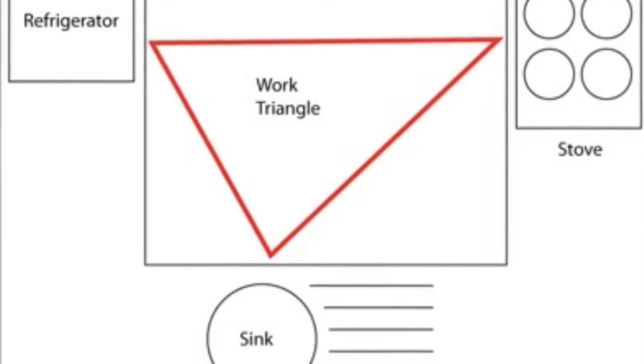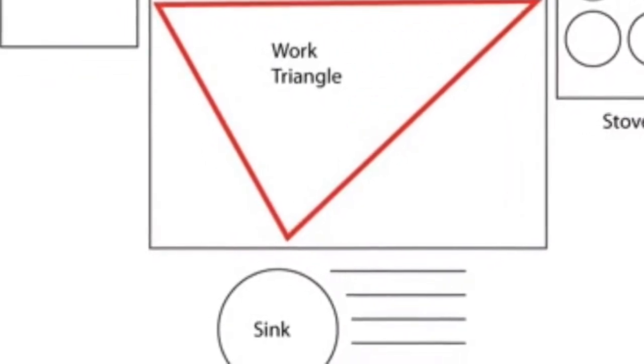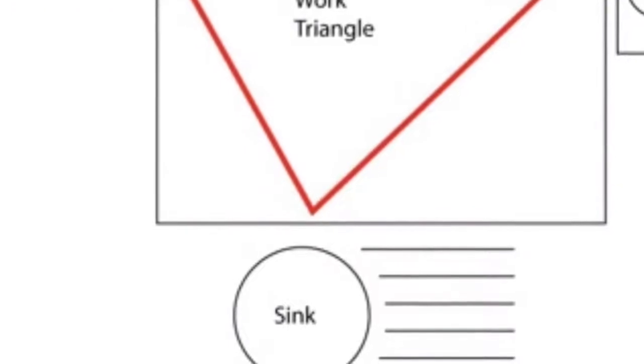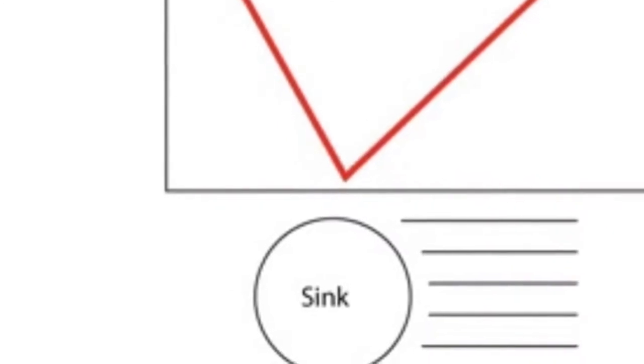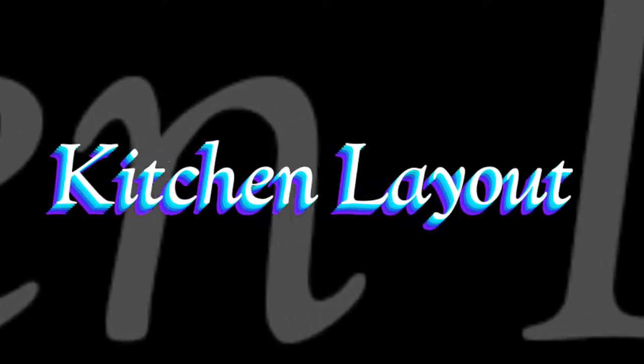The kitchen work triangle consists of the kitchen top, the sink, and the fridge. This triangular area is key — if you set the triangular area correctly, you will work efficiently and be more relaxed. Setting up this triangle properly allows you to work efficiently.